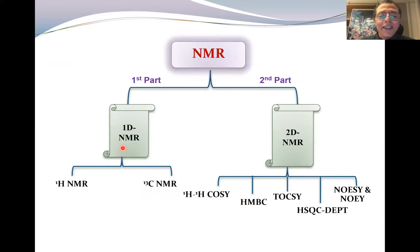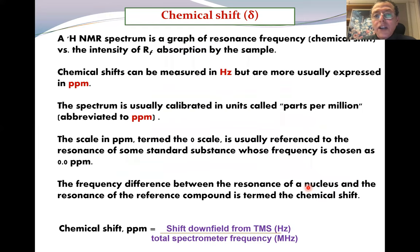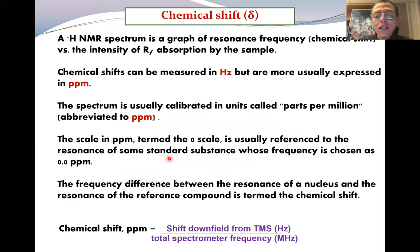In a very simple way, we will start today with proton and carbon NMR, and we will see together how we can use this powerful technique even with only one-dimensional NMR. In the next lecture it will be two-dimensional with more examples. Starting with proton NMR: the first concept is called chemical shift, or delta. This delta is in ppm, and this is the equation to calculate it.